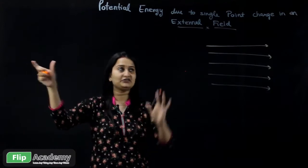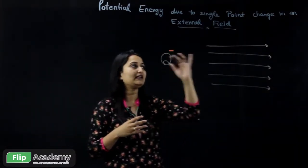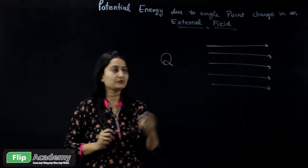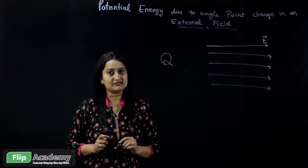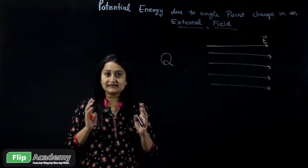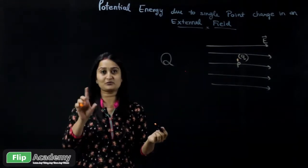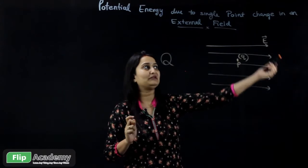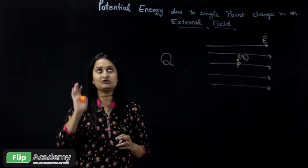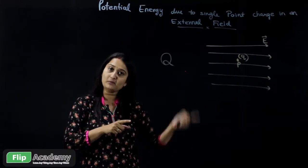The source charge is placed at a very far distance, near infinity. This source charge produces the electric field — a finite value of the electric field strong enough to produce influence on another charge. This is your external electric field. We take another point charge and place it in the electric field at point P. This small charge q comes from infinity all the way and is placed at point P. Our motive is to find out the potential energy. The potential energy is the work done in moving the charge from infinity to a particular point.